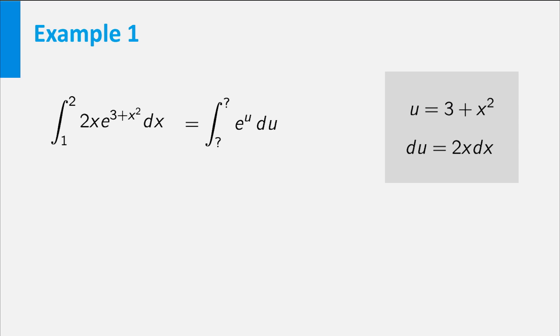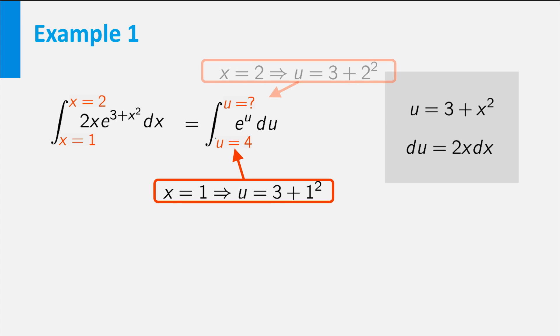Well, in the original integral the boundaries indicate the smallest and largest value of the variable x, x ranges from 1 to 2. In the new integral we should put the corresponding boundaries for the variable u. If x is equal to 1, then u is equal to 4. If x is equal to 2, then u is equal to 7.